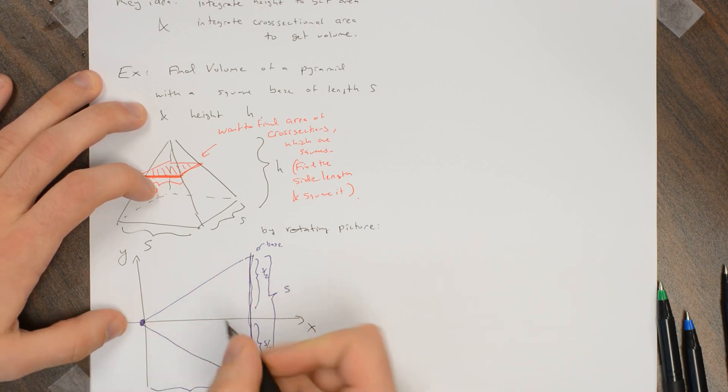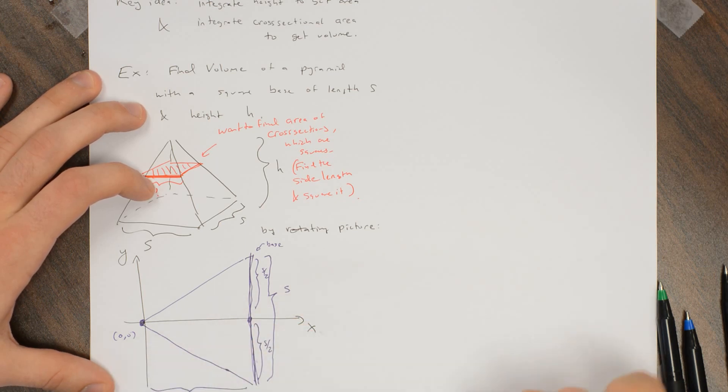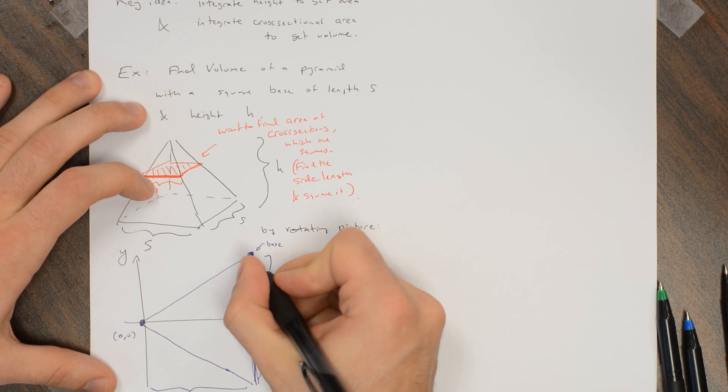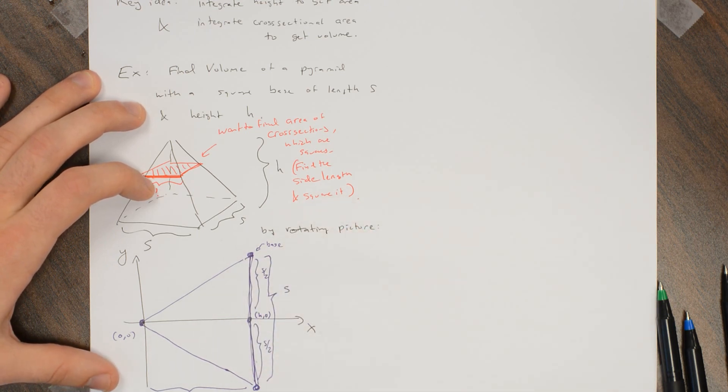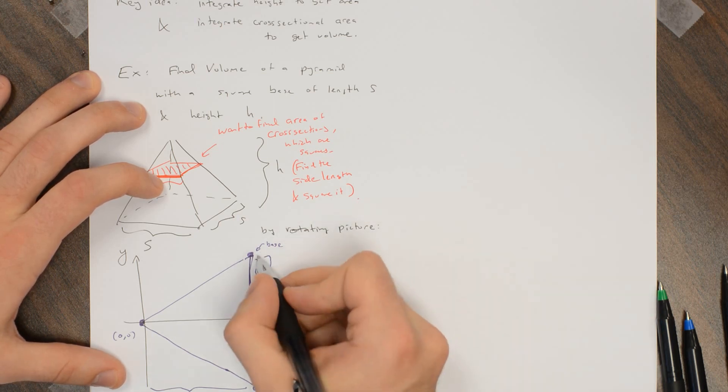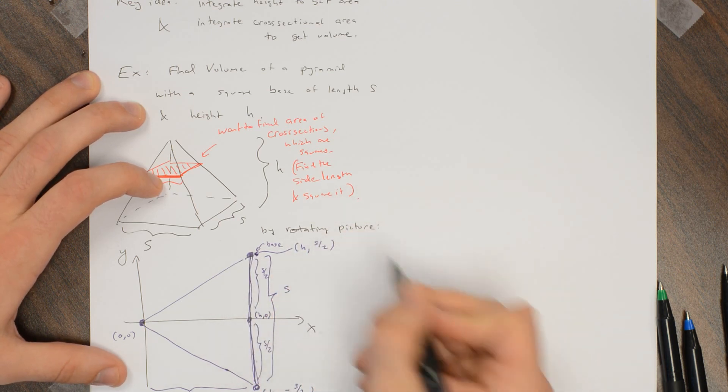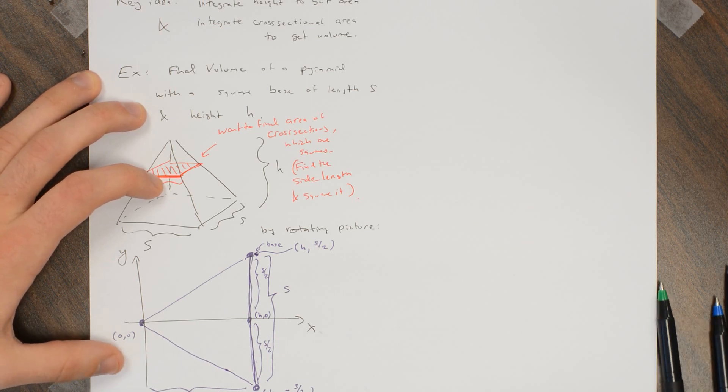So if I put the peak of the pyramid at the origin, 0, 0, then this is h units in the positive x-direction, so this is h, 0, and that tells me what these two other points are. This is the point h units in the x-direction, and then down s over 2 units, this is h, minus s over 2, and similarly, this corner of the base of the pyramid is the point h, s over 2.